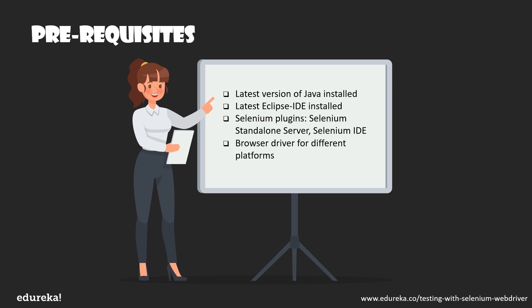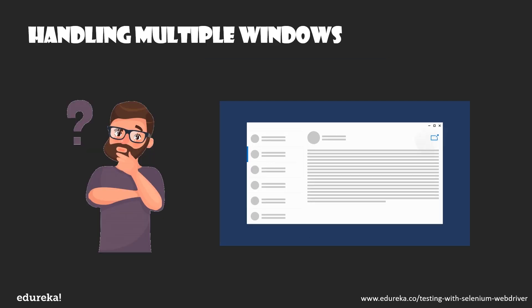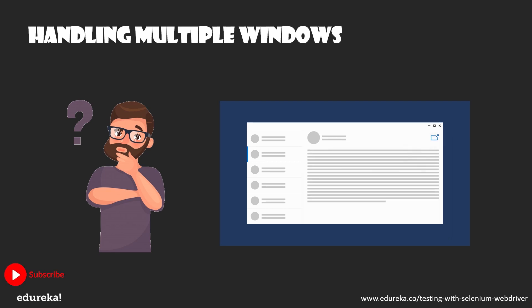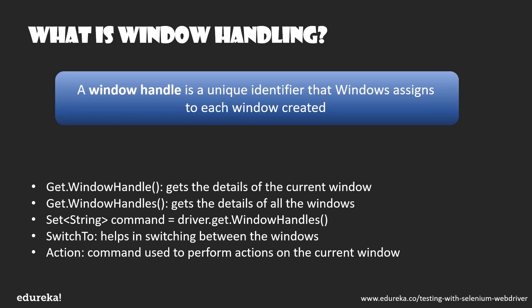Now let's understand the core topic: multiple window handling. If you're working on an application and want a particular link to open in a new window, how would you do that using Selenium? We use the window handling function to deal with multiple windows simultaneously. The window handle function helps in handling multiple windows, with syntax: driver.getWindowHandle(), which returns a string with the current window's handle.